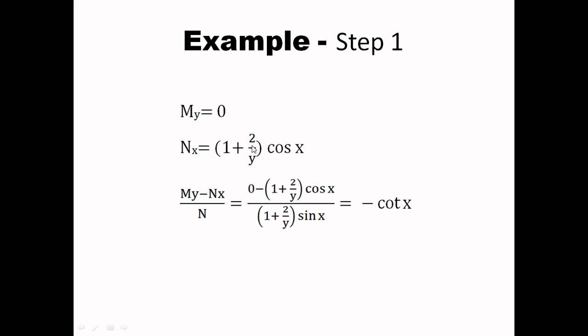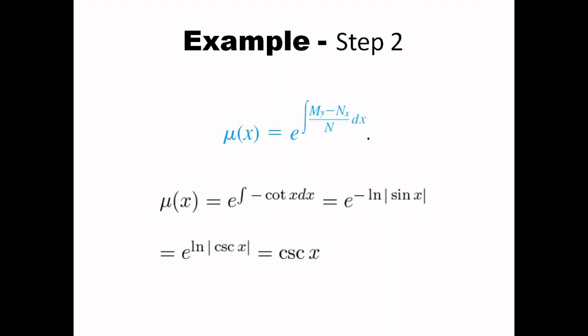Since the partials are not equal, step one is to find out (My minus Nx) divided by N. The answer comes out to be negative cot(x). Since this is purely a function of x, there is no need to find the other function. We use (My minus Nx) over N to compute the integrating factor, which will be purely a function of x.